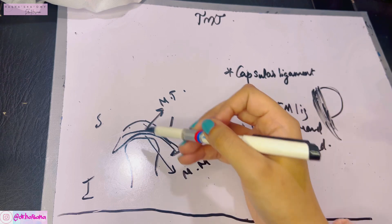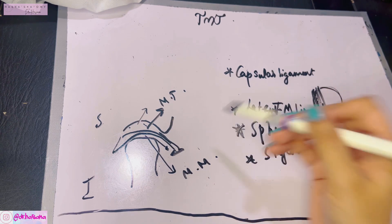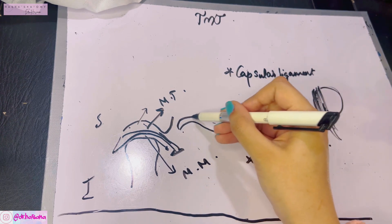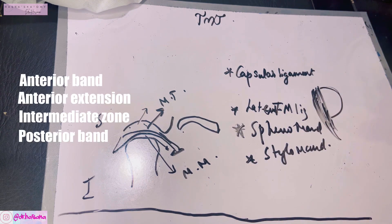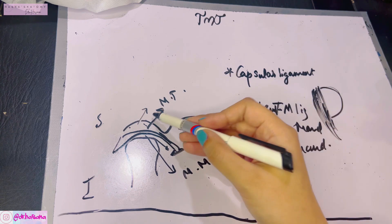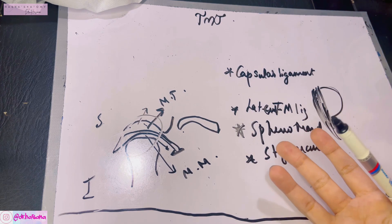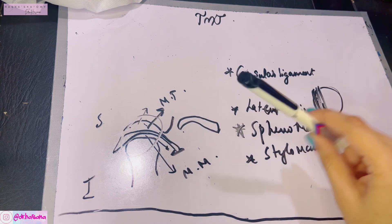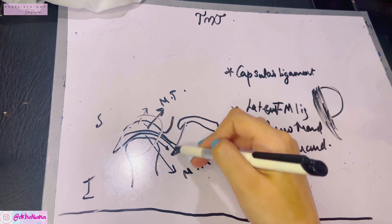Some movements occur in the upper compartment and some in the lower. In the upper compartment, mostly gliding movements occur; in the lower, rotatory plus gliding movements occur. The disc is concave-convex above but only concave below. The disc also has structural parts: an anterior band, anterior extension, intermediate zone, posterior thick band, and a bi-laminar region.